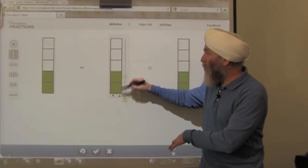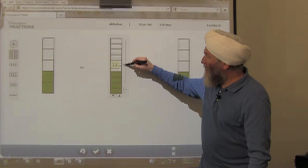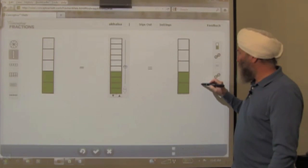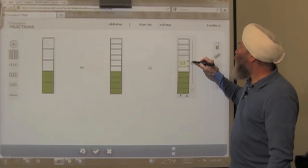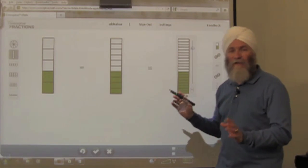I'm going to change the number of equal parts. I'm not going to change the quantity of the shaded area, but I'm going to make this into ten equal parts, and I'm going to make this one into twenty equal parts. Very simple discussion.